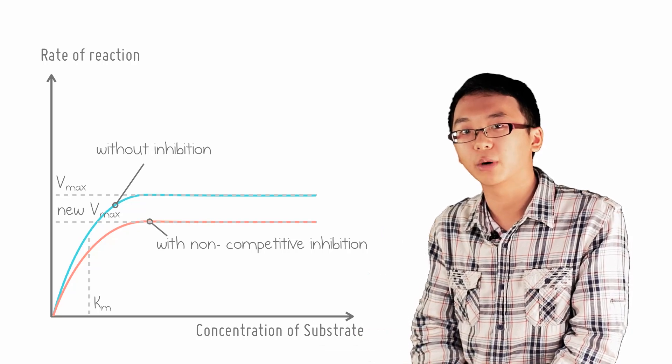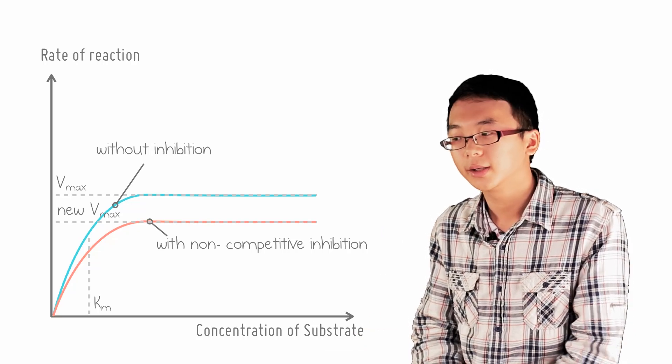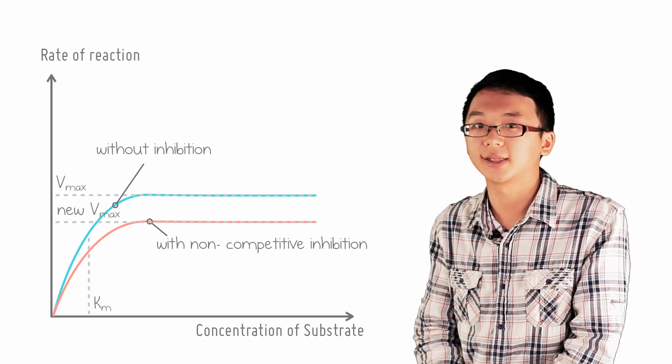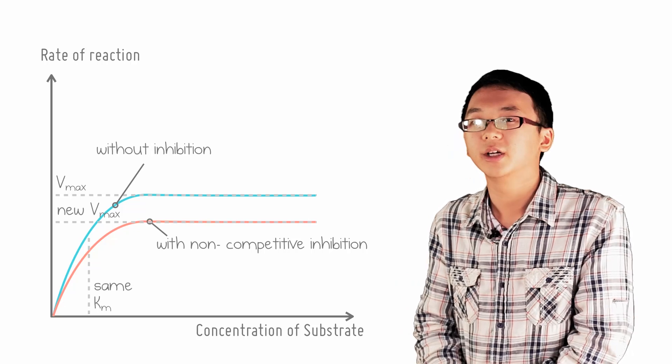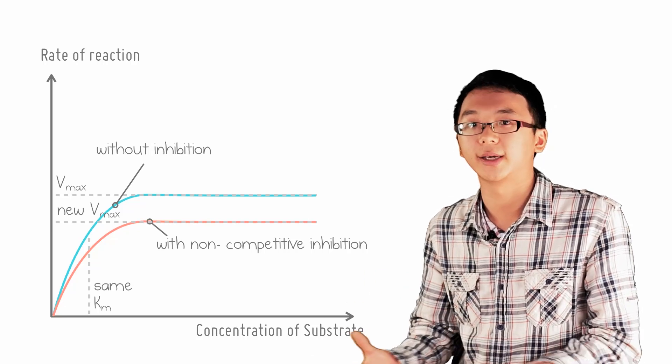And eventually, it will plateau at a lower maximum rate of reaction. The KM, however, remains the same as the affinity of the enzyme for the substrate is actually still the same, just that there are now less working enzymes.